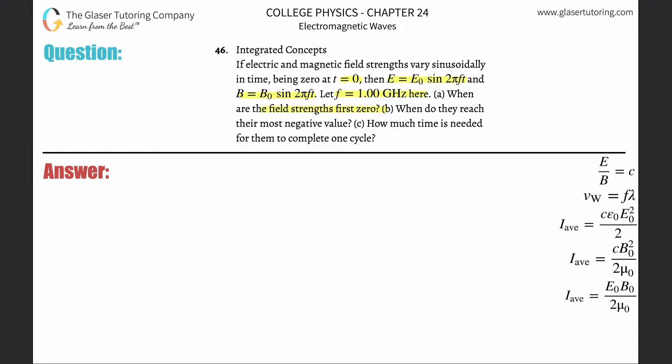So basically we have two formulas here that the magnetic field strength at some point in time is equal to B_max multiplied by the sine of two pi frequency times time. And the electric field is basically the same thing, two pi frequency times time.